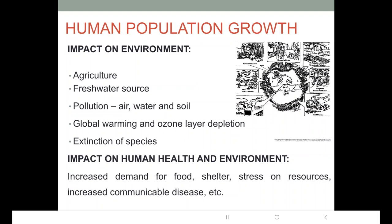Having understood the impact on the environment, let us understand the impact of human population growth on human health. There is environmental degradation — agriculture is affected, water sources are polluted, air is polluted, soil pollution increases, global warming occurs, and ozone layer depletion is seen. The quality of the environment responsible for sustaining life is now decreasing — this is environmental degradation.